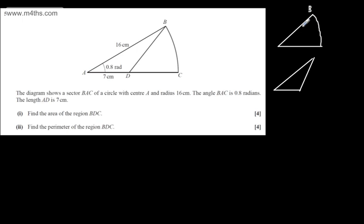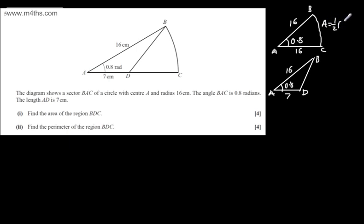Here is my sector. We've got B, A, and C. We have an angle of 0.8 radians and both AB and AC will be 16. We have the triangle with an angle of 0.8, with B, A, and D — we know AB is 16 and AD is 7. The area of a sector is ½R²θ, where R is the radius and θ is the angle in radians. For a triangle, we have ½AB sin C, where A and B are two sides and C is the enclosed angle. So we'll subtract the triangle from the sector.